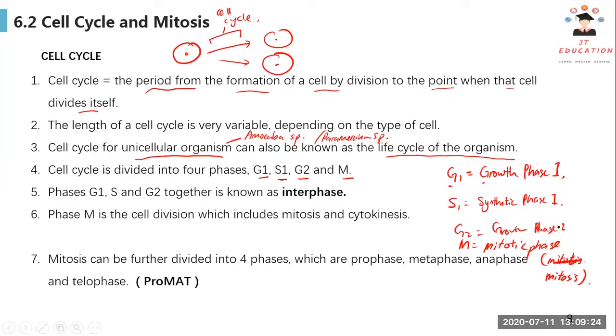Mitosis can be divided into four phases, which is the prophase, metaphase, anaphase, and telophase. So it will be ProMAT. Later we will talk about it. Let's talk about G1, S, and G2 phase first. All these are known as the interphase.